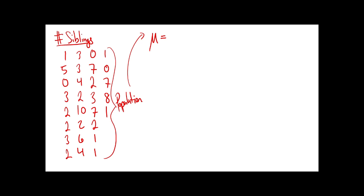I think that's 29 numbers there. Add them all up, divide by 29, tell me what you get. Three point one seven? Three point one seven. So as students, you have an average of 3.17 siblings - just a little over three. That's the average number.